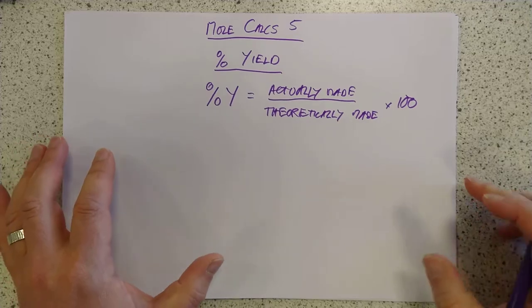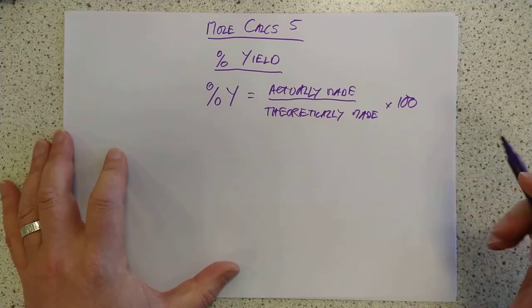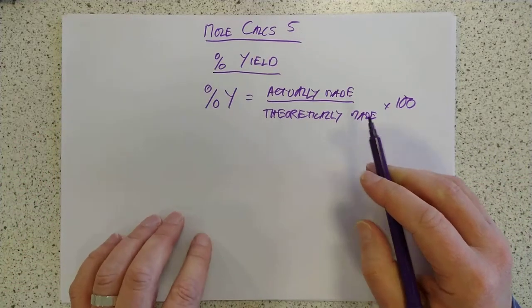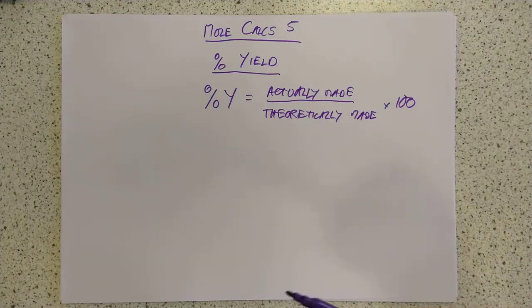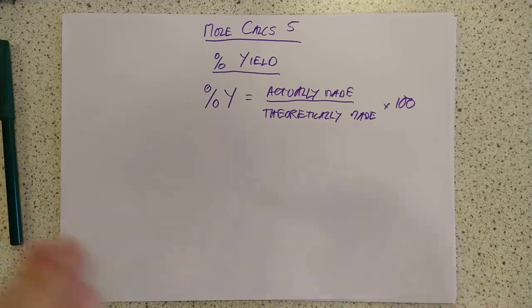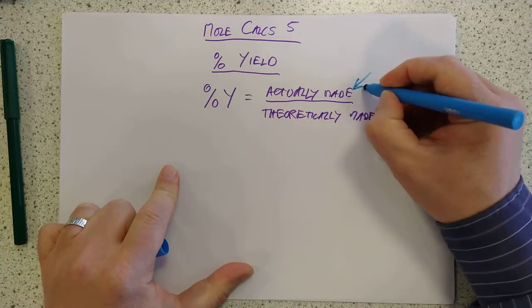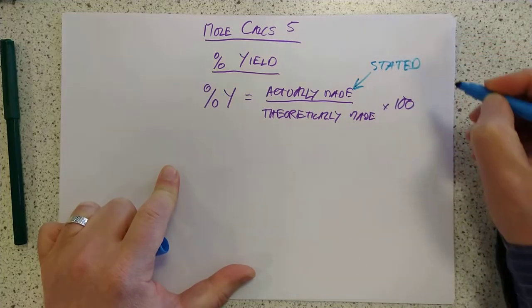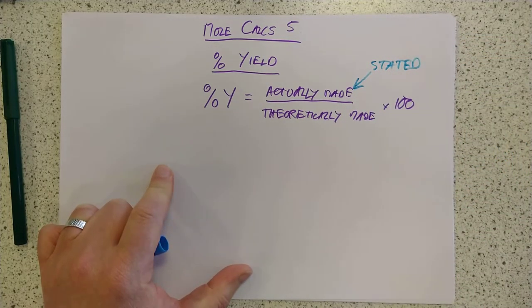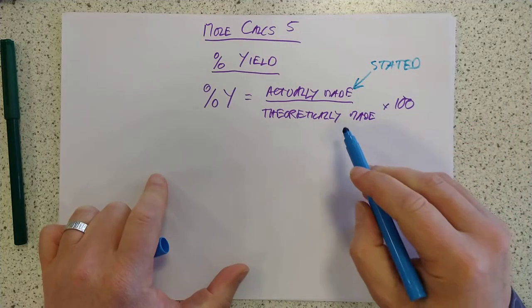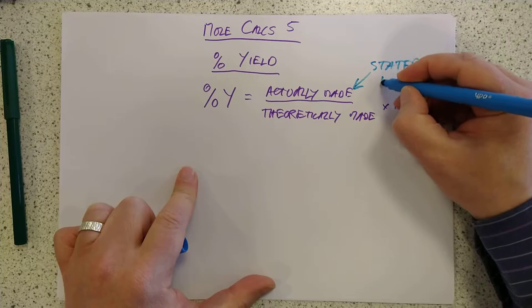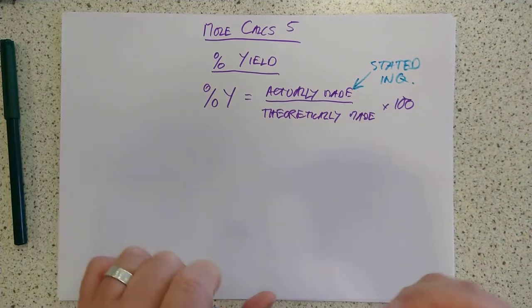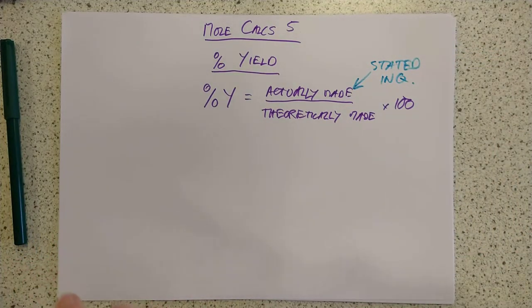So percentage yield is relatively easy to work out at first glance. It's how much you actually made, that's mass, over the amount that you theoretically made, times 100 of course to turn it into percent. I'll do two examples. One is your classic one and one is slightly twisted.